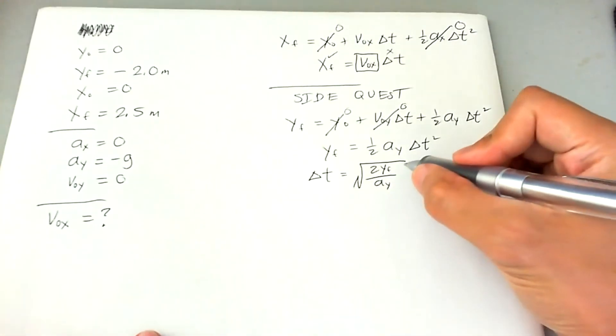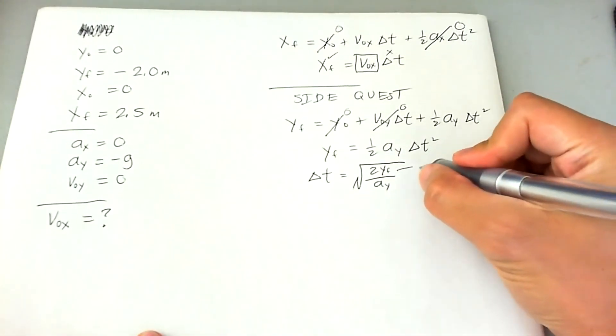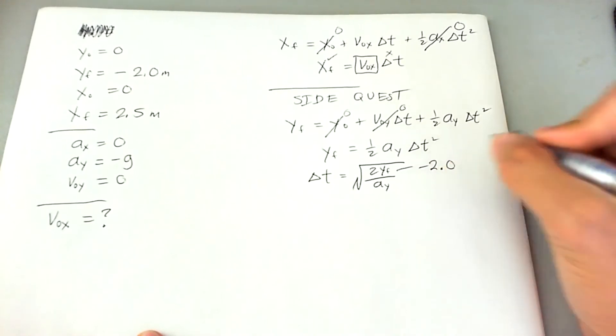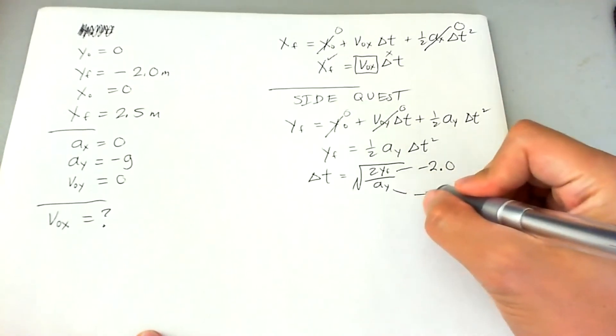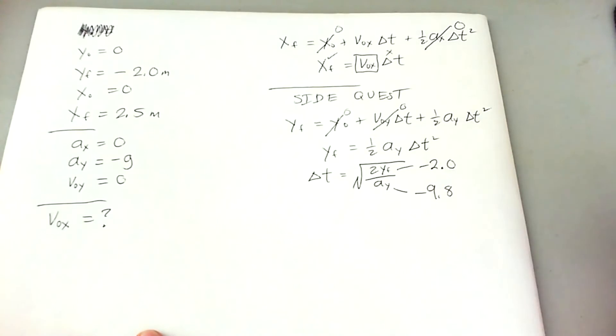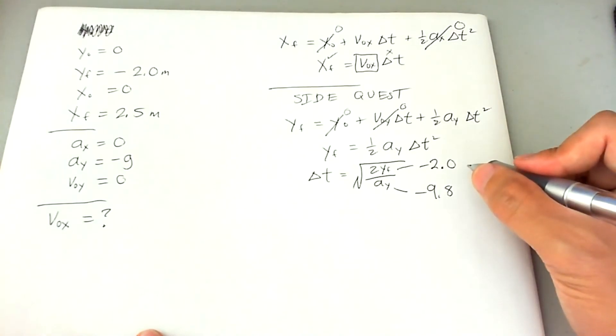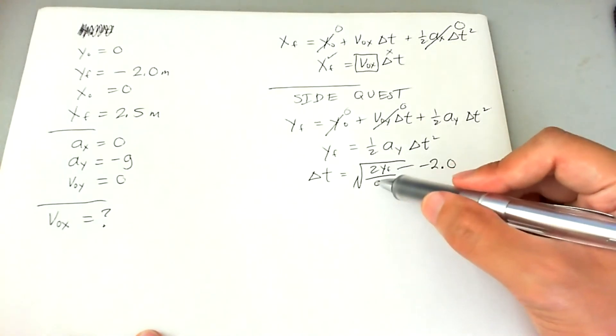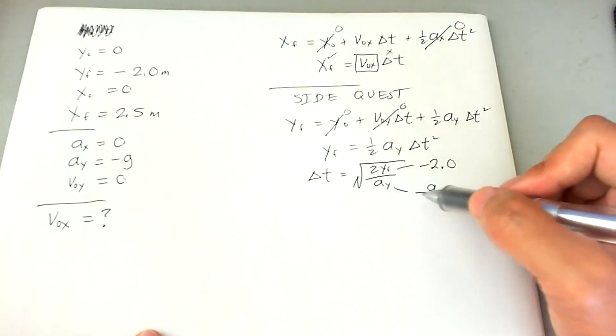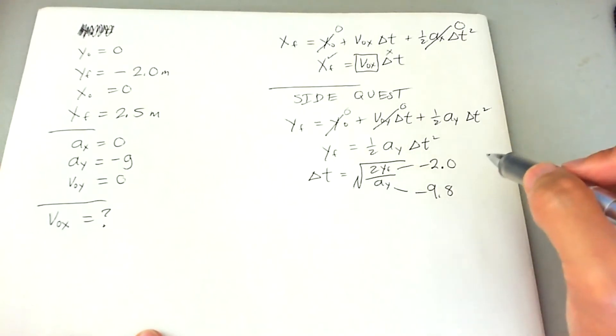Putting this all into a calculator. Well, we know that YF is negative 2.0 and A Y is negative 9.8 meters per second squared. And this is just meters. And since negative and a negative cancel each other out, this is great so that we can take a square root. It's not an imaginary number.